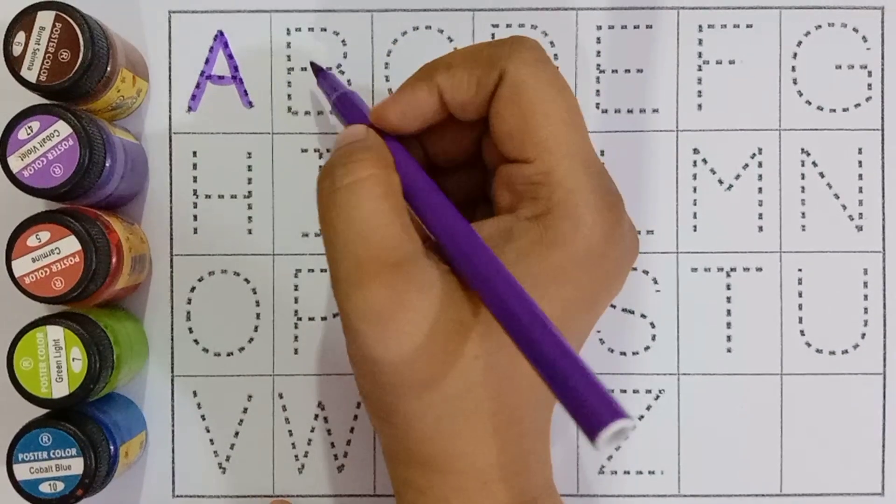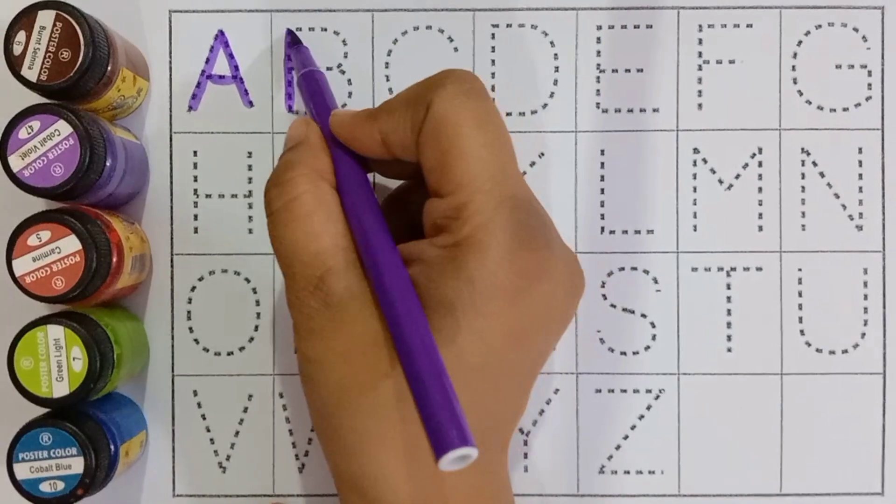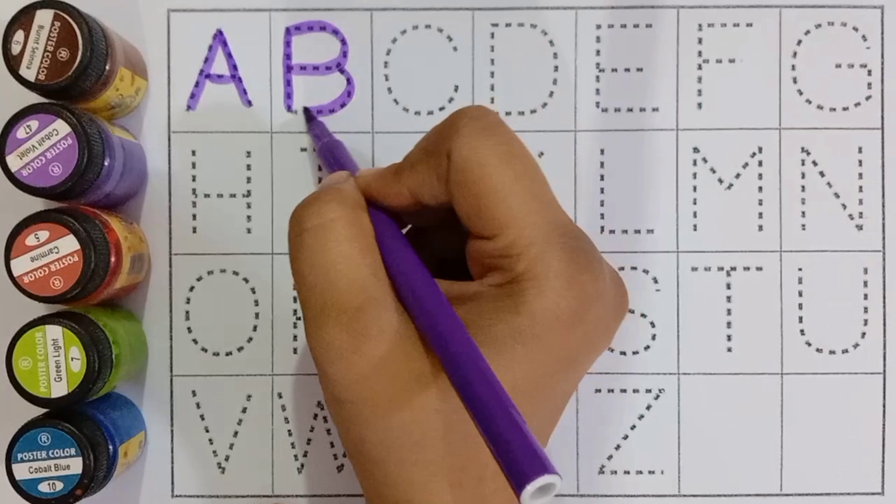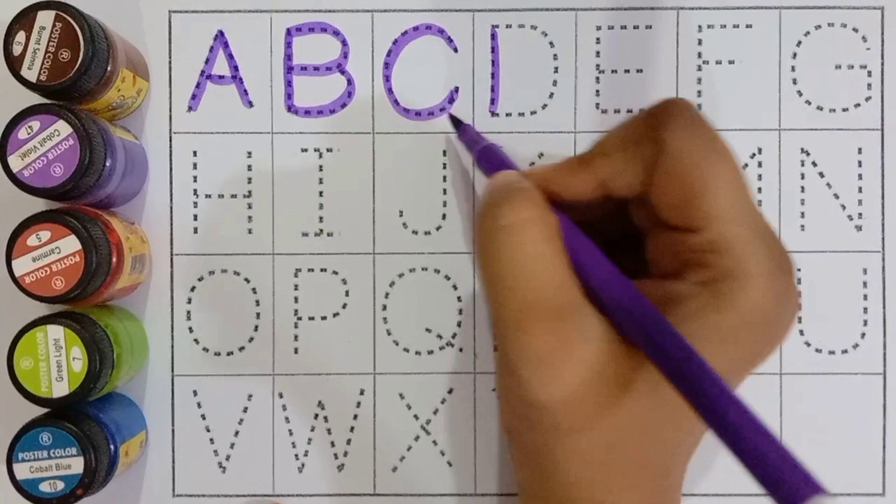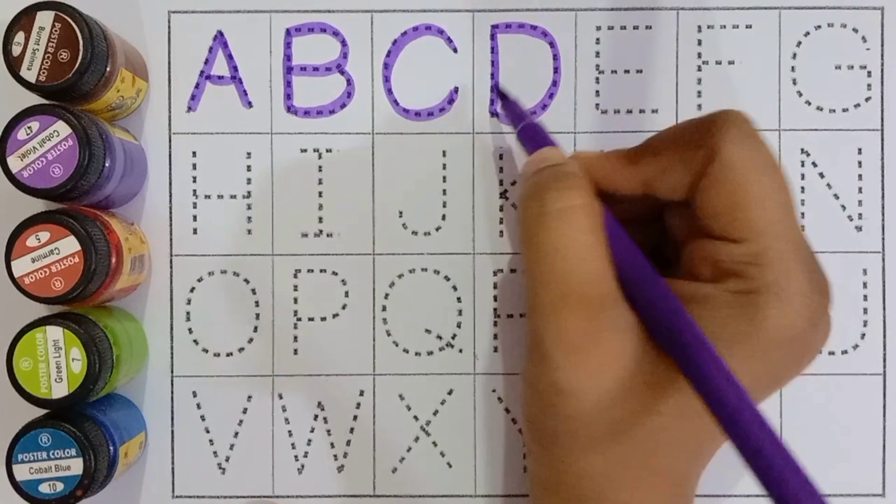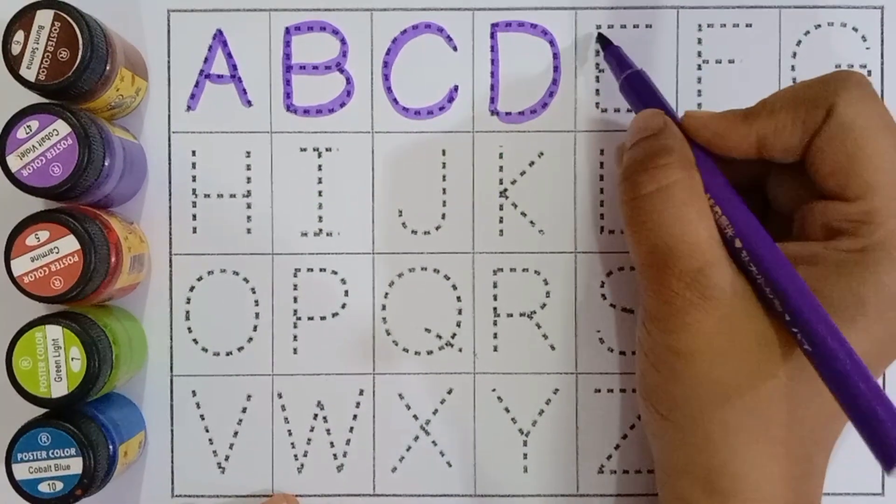A for apple, A for apple. B for basket, B for basket. C for cat, C for cat. D for doll, D for doll.